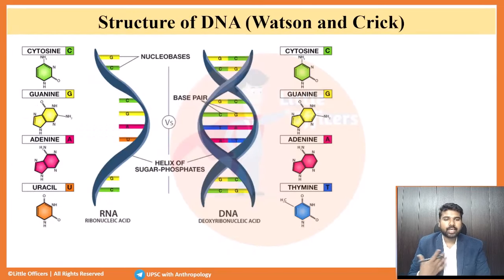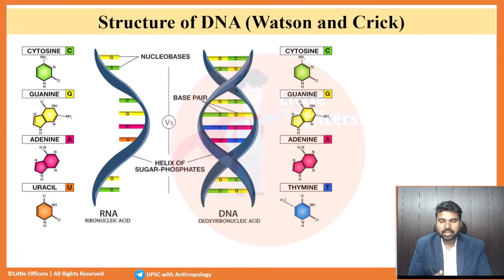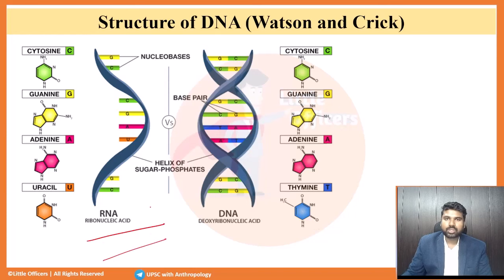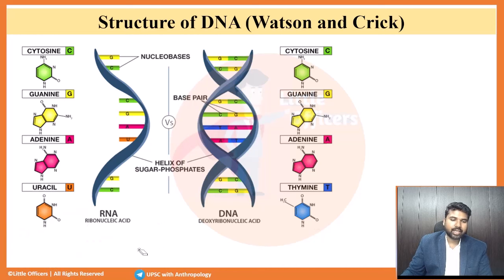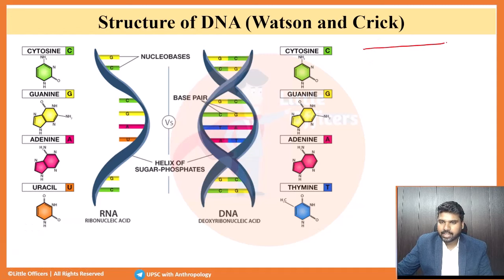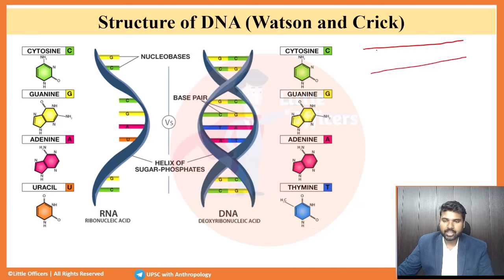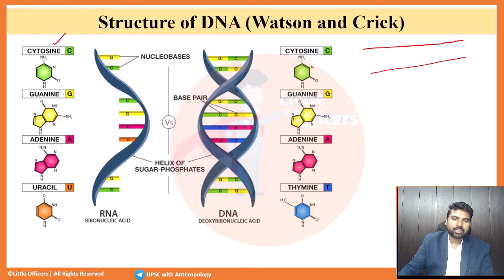Now, coming to the structure of DNA. In DNA, two strands are there. I am writing it linear - later I will show you how the twisting is done. Let's say, this is one strand and this is another strand. Within this strand, you have these base pairs - nitrogenous base pairs.